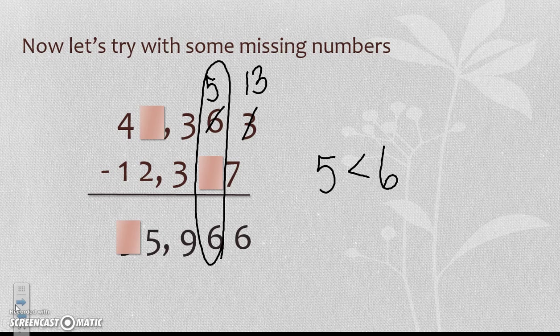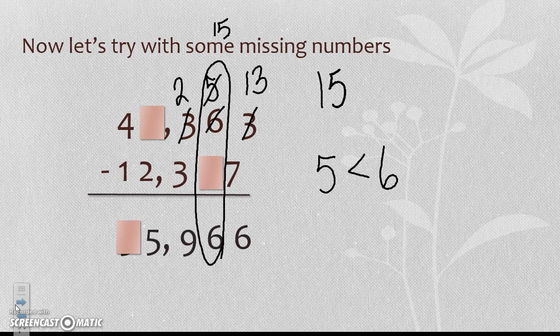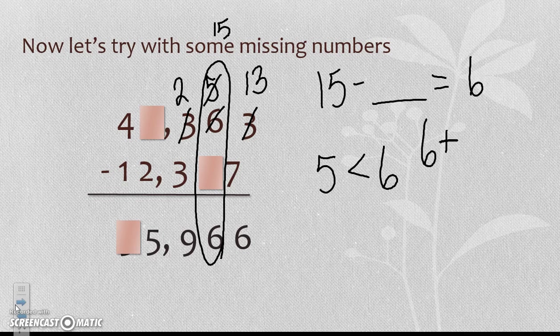So that means I must have subtracted 15 from something to get me 6. So I'm going to regroup this 3 and make the 5 a 15. Now I have to say to myself, 15 minus something is going to get me 6, or 6 plus something is equal to 15.